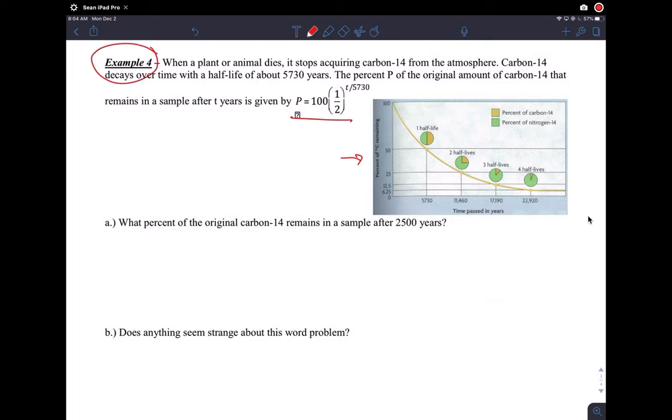So part A, when a plant or animal dies, it stops acquiring carbon-14 from the atmosphere. Carbon-14 decays over time with a half-life of about 5,730 years. The percent P of the original amount of carbon-14 that remains in a sample after T years is given by this. So they've done all the work for you here.